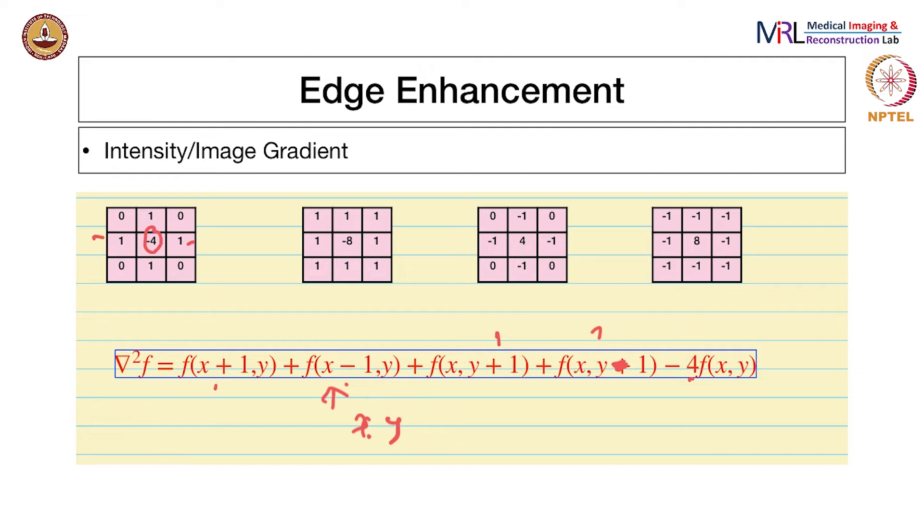This is what they call the filter kernel. You convolve this with the image to get the output, which is the Laplacian of the image.